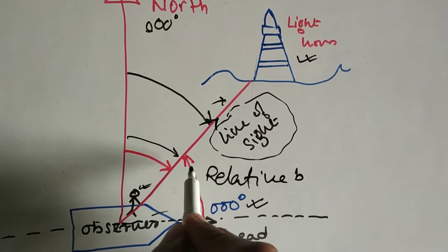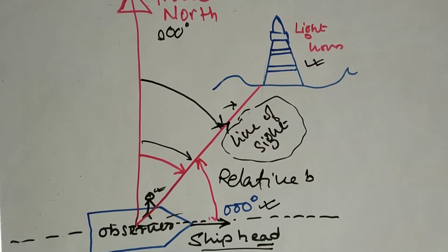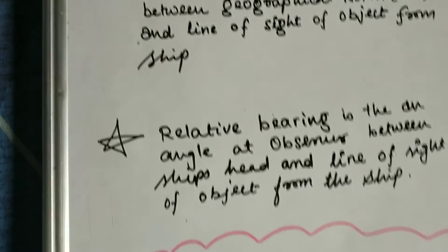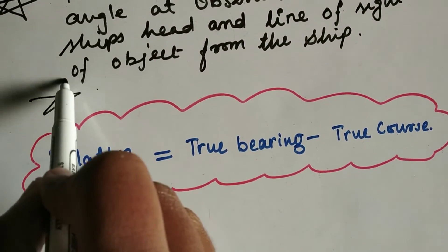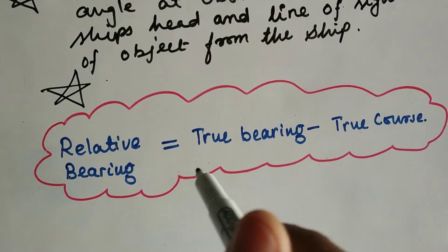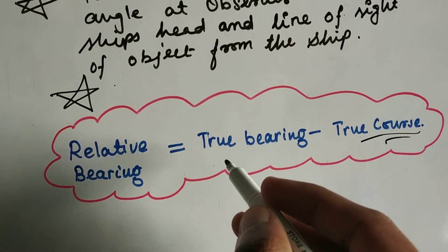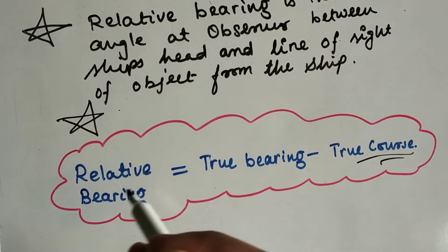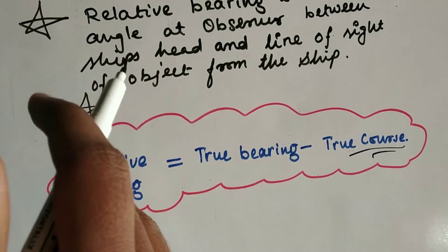From the diagram, this angle will be the relative bearing and this angle will be the true bearing. You can also calculate how to find relative bearing using this formula: the difference between true bearing and the true course of the vessel will give the relative bearing. That covers the topic of true bearing and relative bearing. Hope you have liked it. Thank you.